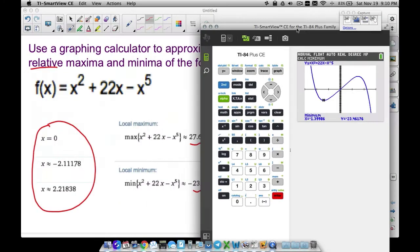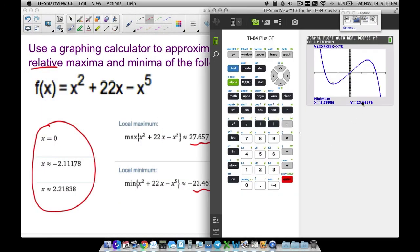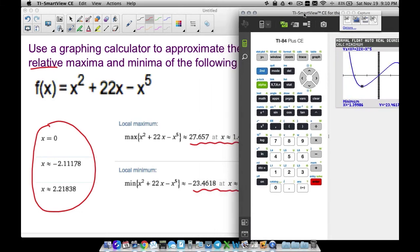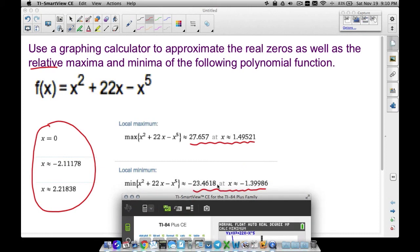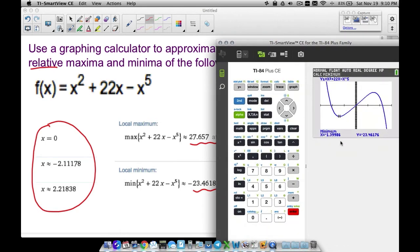And as you can see here, we do have a local minimum of negative 23.46176. And it occurs at X equals negative 1.39986. And as you can see, that's exactly what we have right here. So this is the minimum. And where does it occur at? So the minimum is the Y value. Where it occurs at is the X value. And notice those numbers rounded off give us those two exact pieces right there.